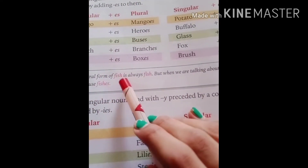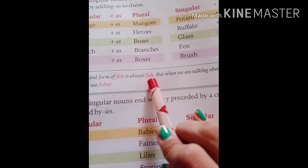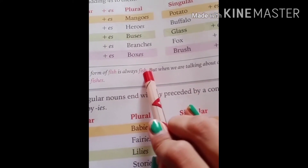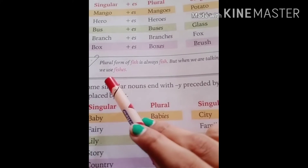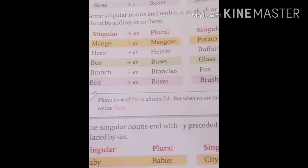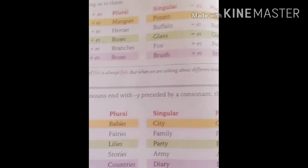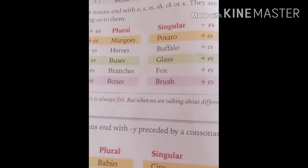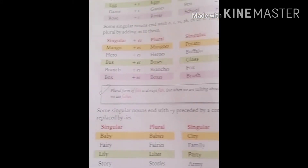The plural form of fish is always fish. But when we are talking about different kinds of fish, we use fishes.